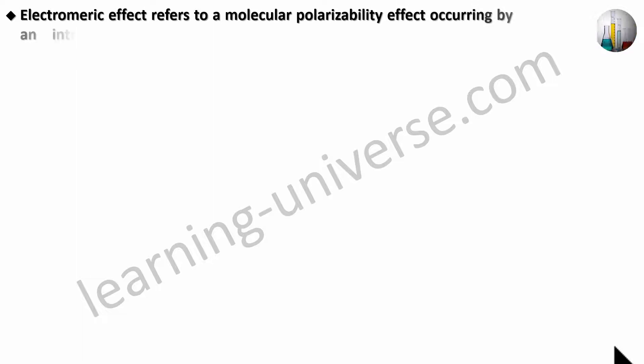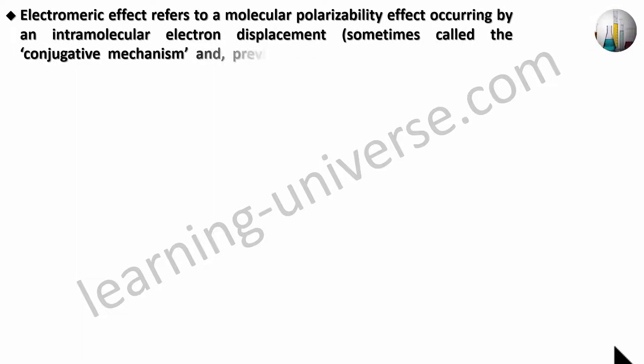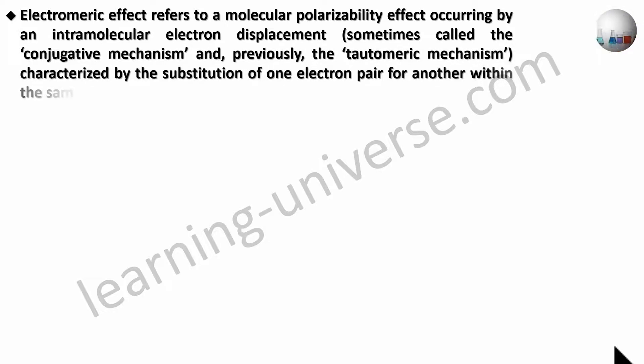Electromeric effect refers to a molecular polarizability effect occurring by an intramolecular electron displacement — sometimes called the conjugative mechanism, and previously termed the tautomeric mechanism — characterized by the substitution of one electron pair for another within the same atomic octet of electrons. Basically, a reagent comes and may bring its own electron pair, which attacks one atom, and that atom transfers another electron pair to another atom. This displacement of electrons is intramolecular, and this type of polarizability is the Electromeric effect.